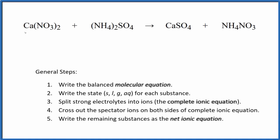To write the balanced net ionic equation for calcium nitrate plus ammonium sulfate, the first thing we need to do is balance the molecular equation. To do that, all we need to do is put a 2 as our coefficient in front of the ammonium nitrate. So we've balanced the molecular equation.